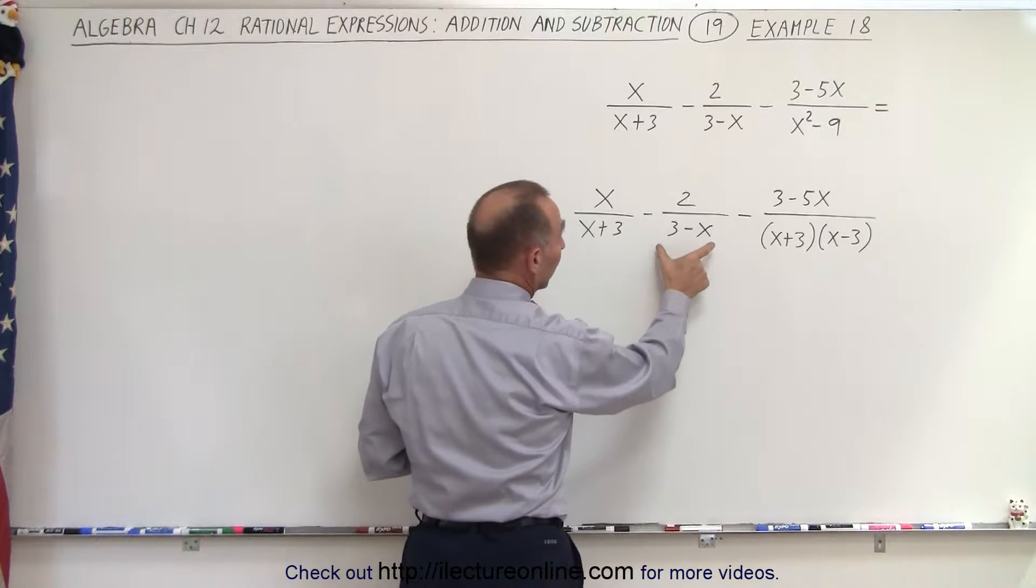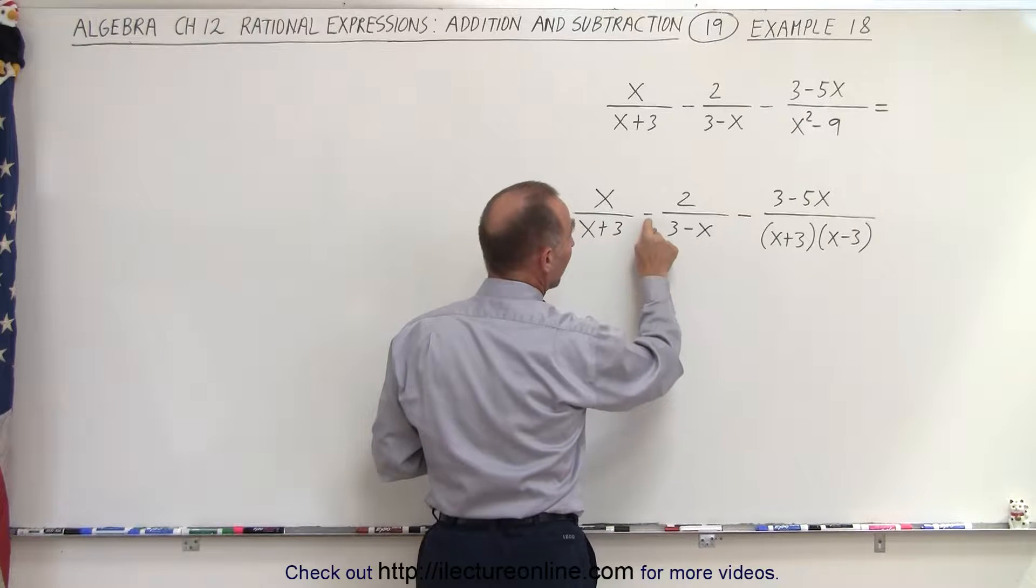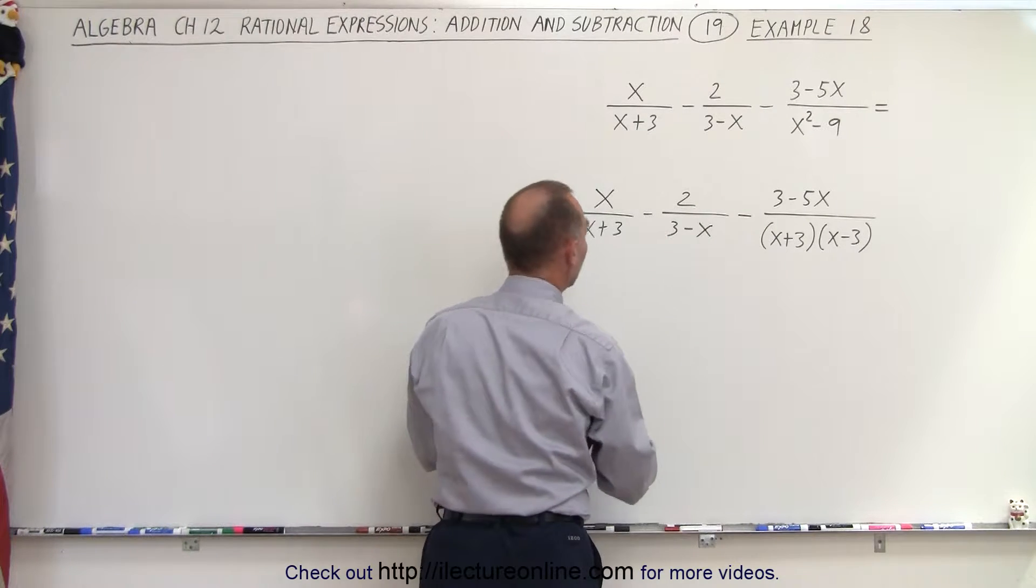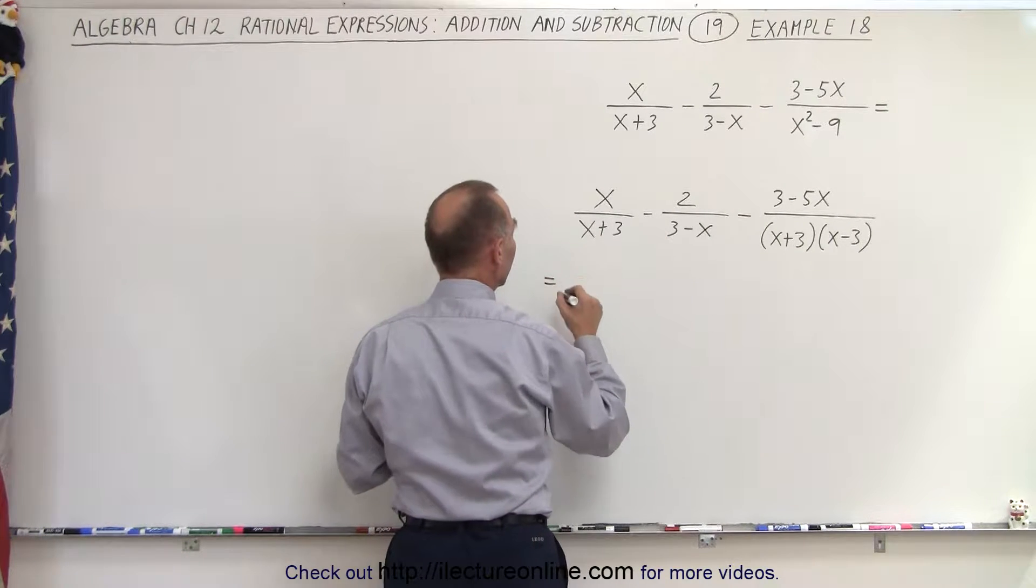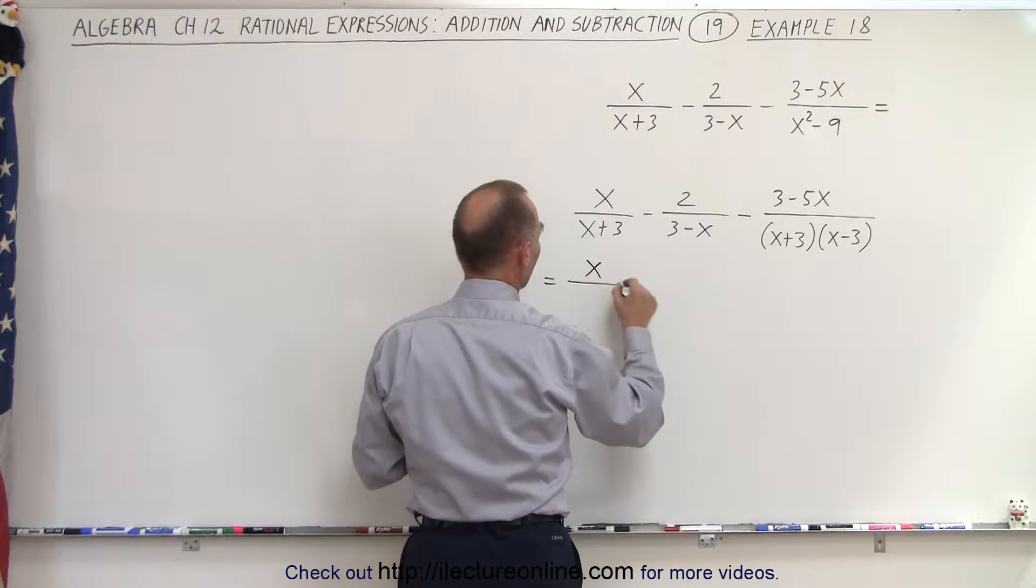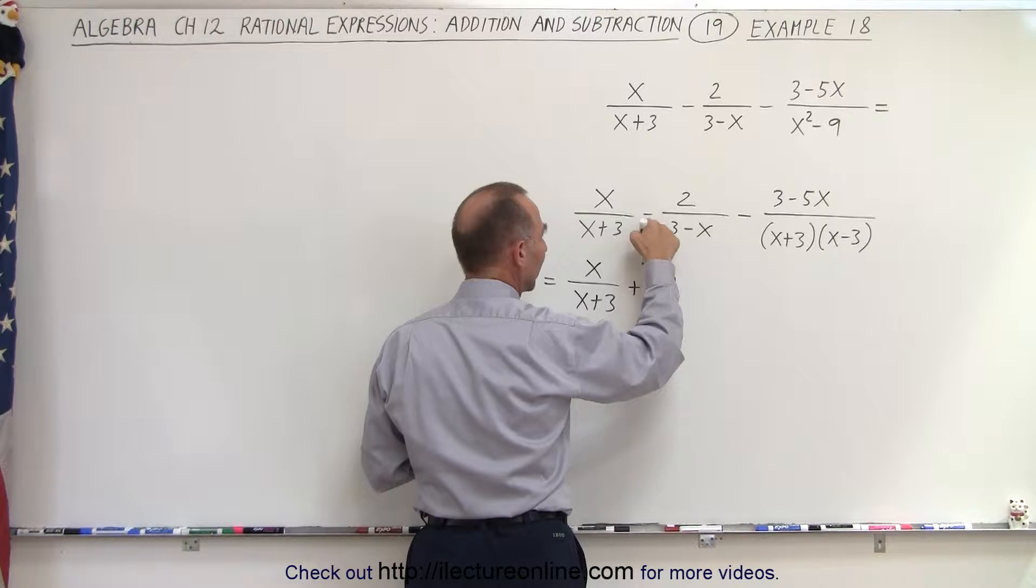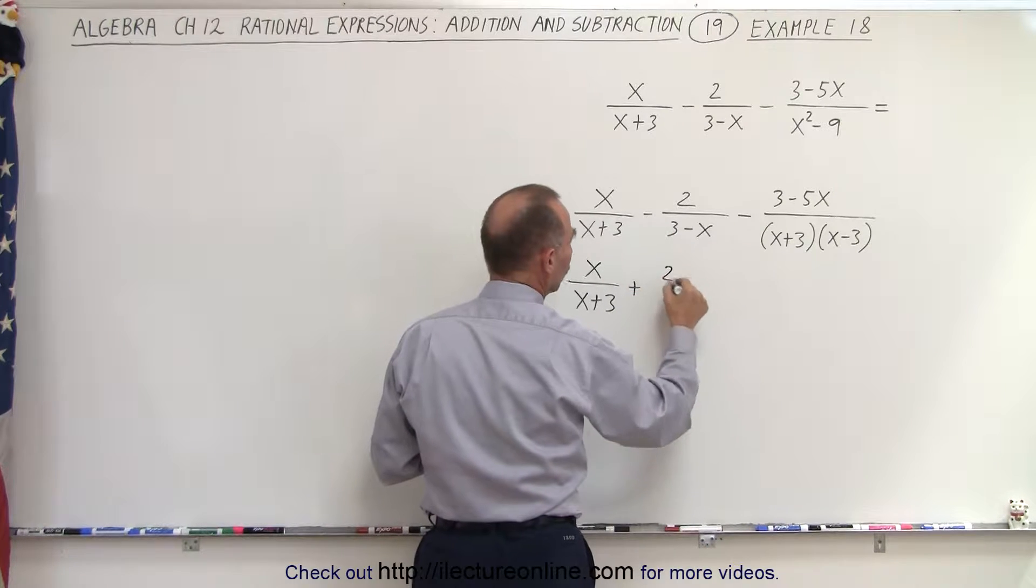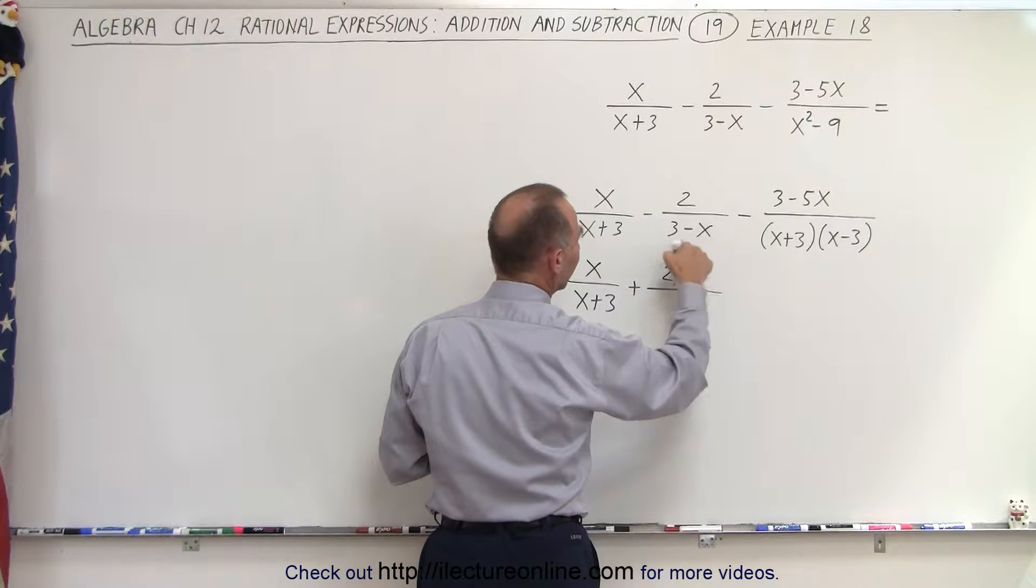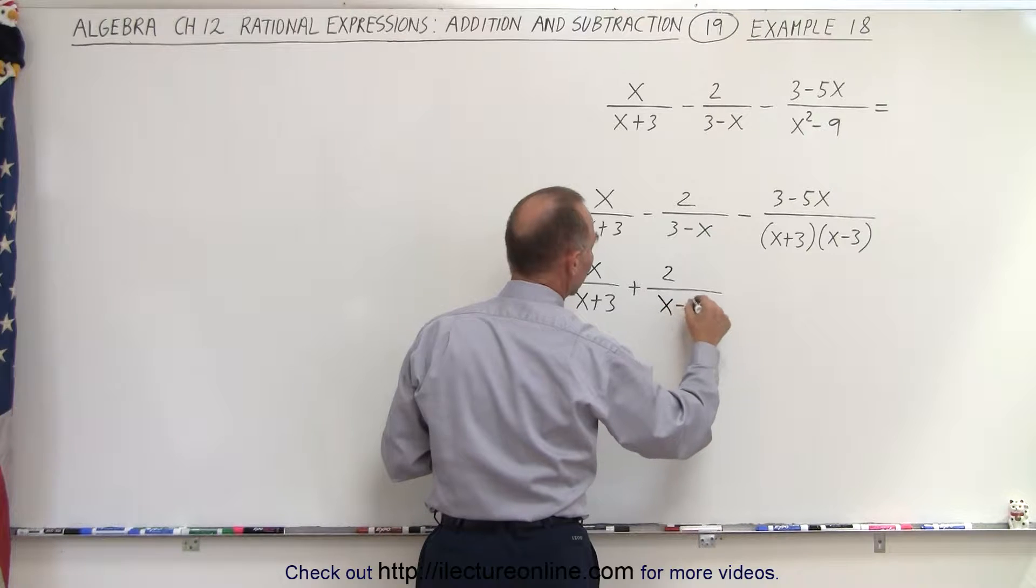We can accomplish that by multiplying the denominator by negative 1 and multiplying this by negative 1. So this can be written as follows: this is equal to x over x plus 3 plus, we change the negative to a plus, 2 over, and now we multiply this times the negative, which becomes x minus 3.